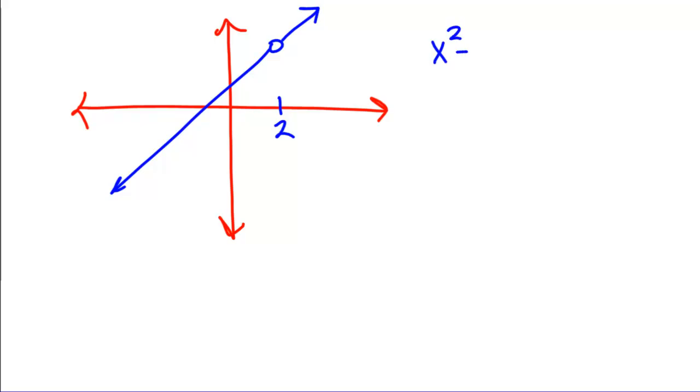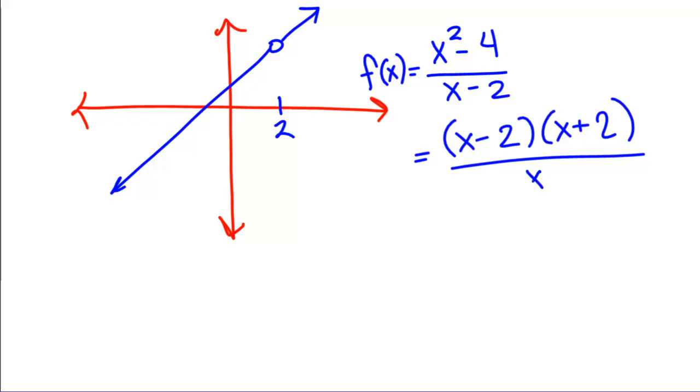X squared minus 4 over x minus 2 can be simplified. I can factor the top into x minus 2, x plus 2 divided by x minus 2, and now you can see the same factor in the top and the bottom. And immediately, you want to cancel those x minus 2's, right?